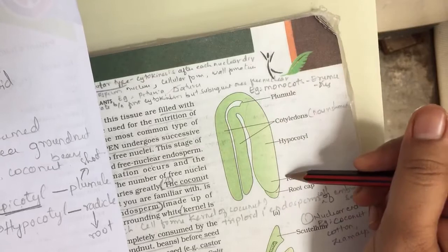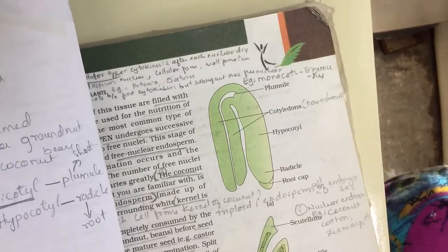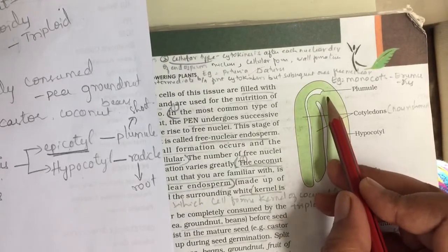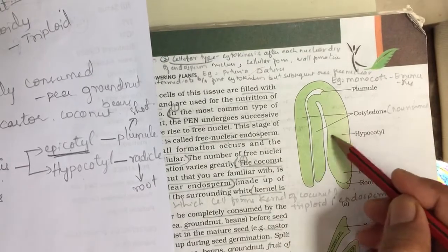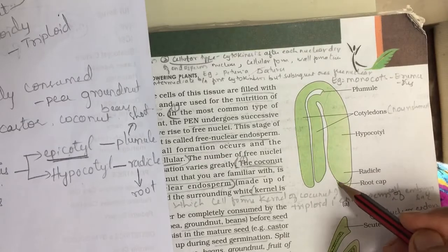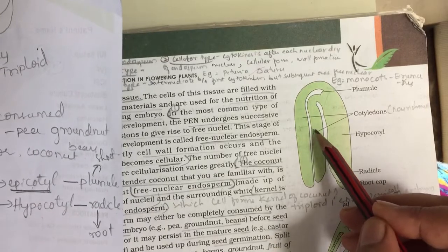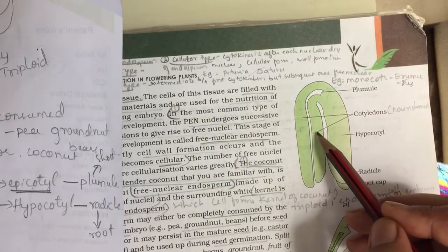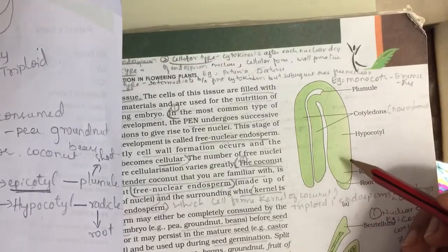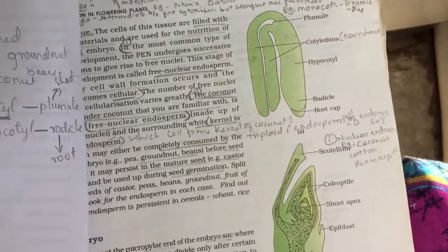The embryonal axis consists of epicotyl terminating with the plumule at the upper region, and hypocotyl terminating with the radicle at the lower region, which develops into the root. The two cotyledons are stored with reserve food material, helping in nourishment of the seed and development of the plant. This diagram is important and has been asked in examinations.